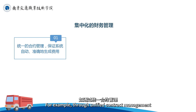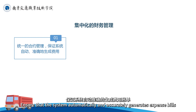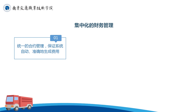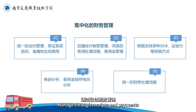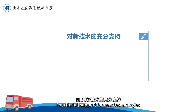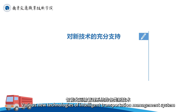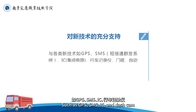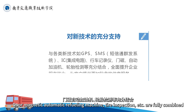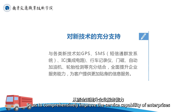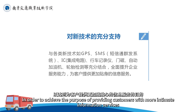集中化的财务管理：智能运输管理系统通过统一财务处理流程，如通过统一合约管理，保证系统自动准确地生成费用账单；通过收付账款管理，完善费用处理流程。对新技术的充分支持：运输管理系统将GPS、SMS、IC卡、行车记录仪、门磁、自动加油机、轮胎检测等各类新技术充分结合，从而全面提升企业服务能力，为客户提供更加贴心的信息服务。